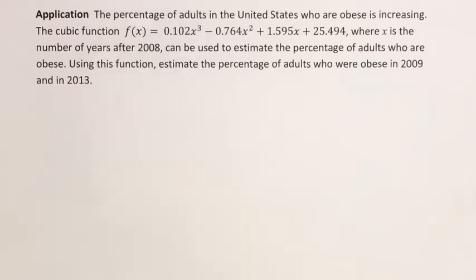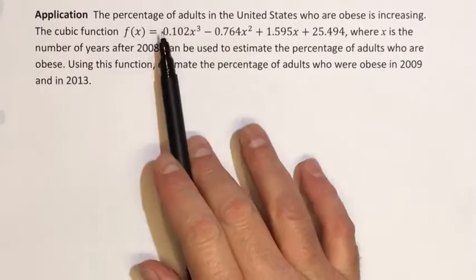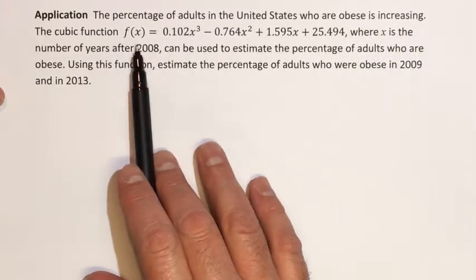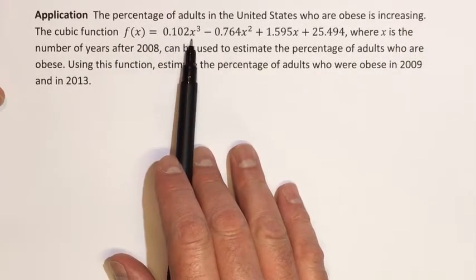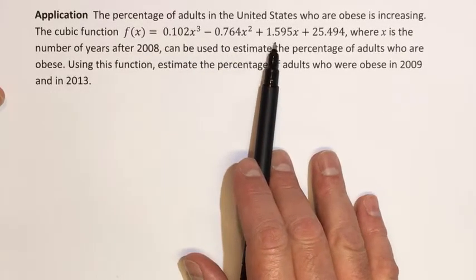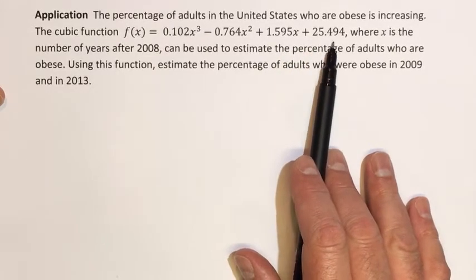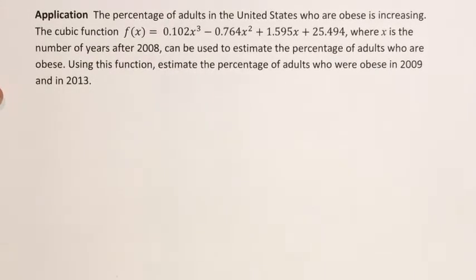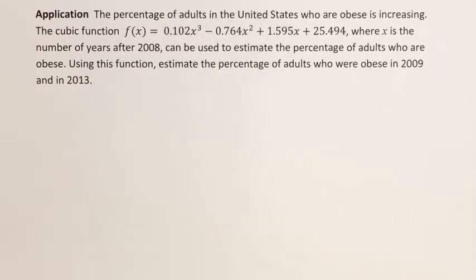In this example, we're going to be looking at an application involving a polynomial function. The percentage of adults in the United States who are obese is increasing. The cubic function f(x) = 0.102x³ − 0.764x² + 1.595x + 25.494, where x is the number of years after 2008, can be used to estimate the percentage of adults who are obese. Using this function, estimate the percentage of adults who were obese in 2009 and in 2013.